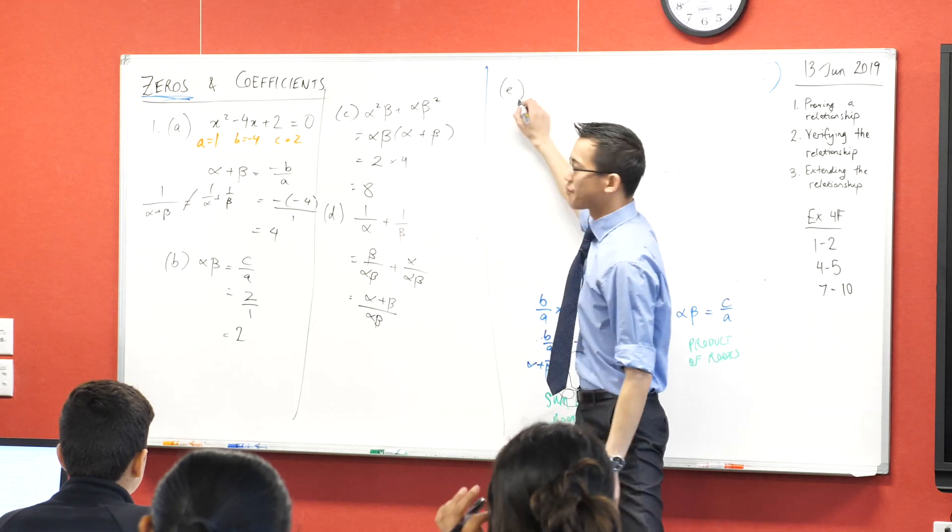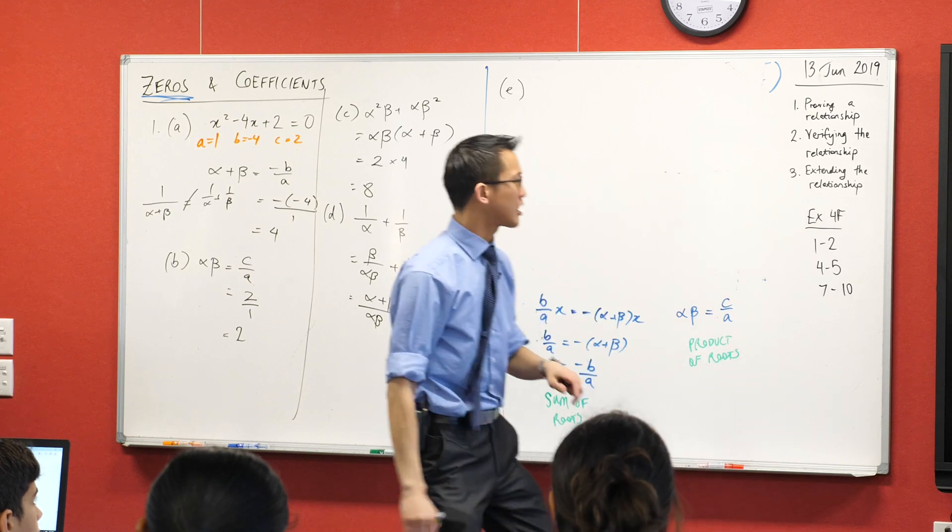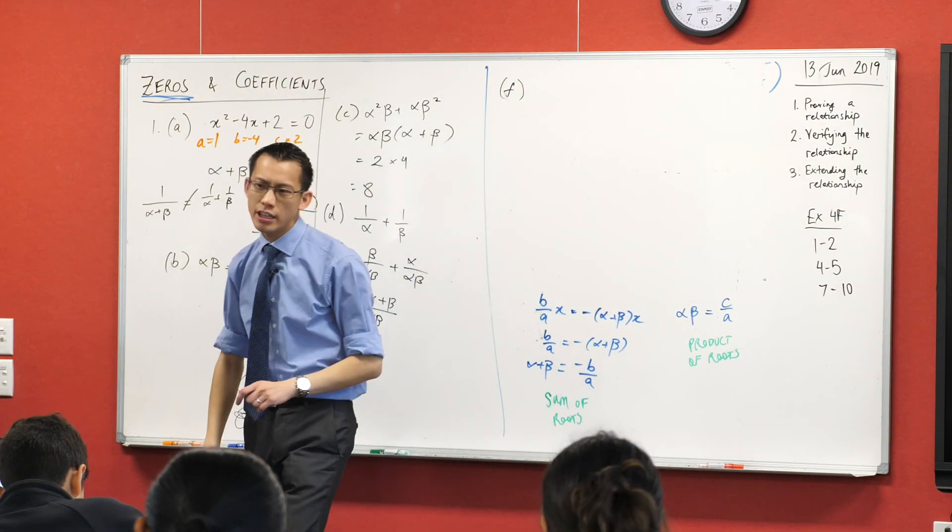Year 11, stay with me. This next one, actually, sorry, I'm going to skip over e because I think you can work it out without my help. F is a little bit sneakier.